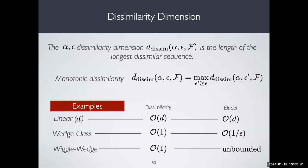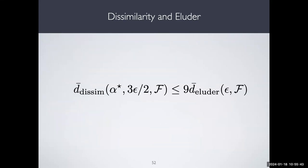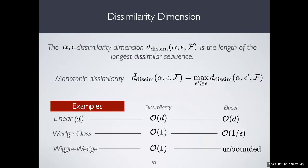We can show first that the dissimilarity dimension is always less than or equal to the eluder dimension. Second, for the examples considered: the dissimilarity dimension is D for linear classes (same as eluder), O(1) for the wedge class (where eluder is 1/epsilon), and constant for the wiggle wedge class (where eluder is unbounded).